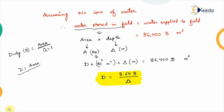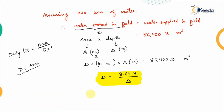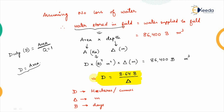This is the relationship derived for the different parameters involving duty, base period, and delta. In this formula, duty D is measured in hectares per cumec, delta Δ is in meters, and base period B is in number of days. Only with these units should this formula be used; otherwise the units have to be changed. D represents duty, Δ represents delta, and B represents the base period.